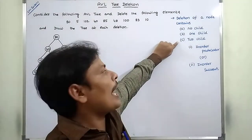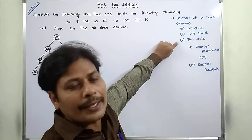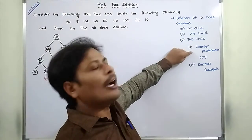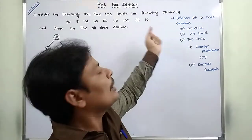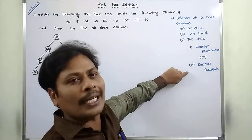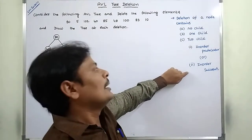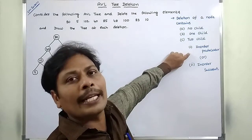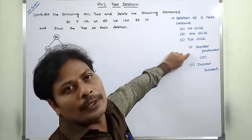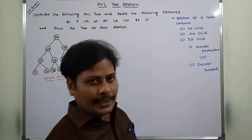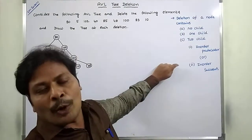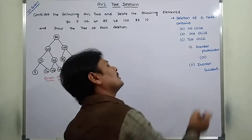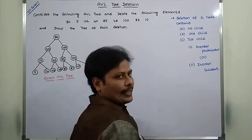If the deleted node has two children, the deleted node can be replaced with either the in-order predecessor or the in-order successor of that node. The deleted node can be replaced with the maximum element in the left subtree — that is called the in-order predecessor. The deleted node can also be replaced with the minimum element in the right subtree — that is the in-order successor.